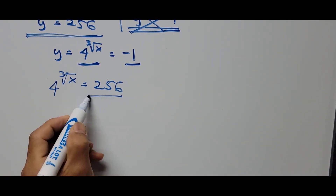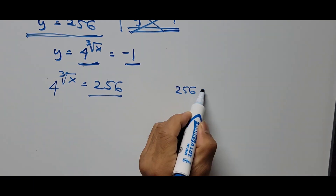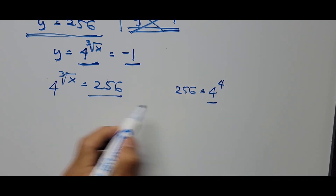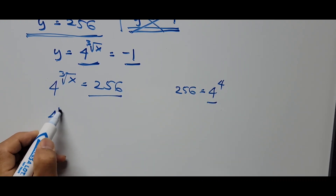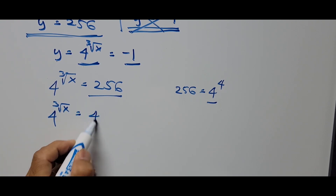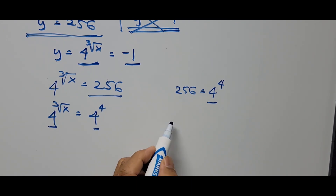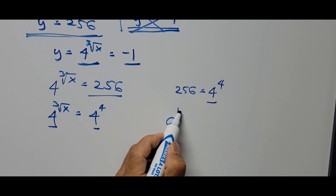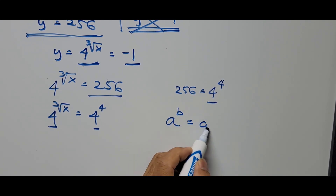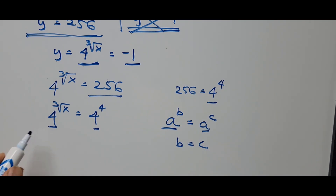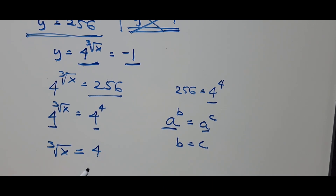We focus our attention on the right side of the equation. This constant 256 will also be written as 4 raised to the 4th power. So we substitute this value: 4 raised to the cube root of x equals 4 raised to the 4th power. We have the same base, so we're using our rule that is: if a raised to b equals a raised to c, then b equals c. Since we have the same base, we're equating the exponents. So this becomes the cube root of x equals 4.